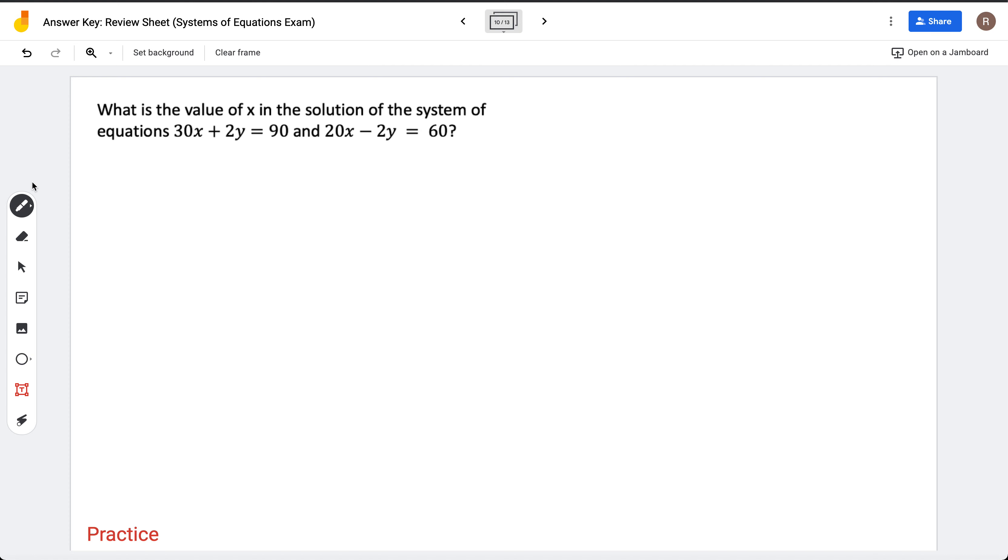Here we go for number six. What is the value of x in the solution of the system of equations 30x plus 2y equals 90 and 20x minus 2y equals 60?